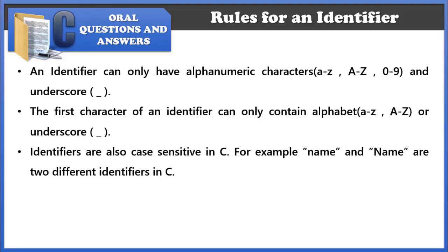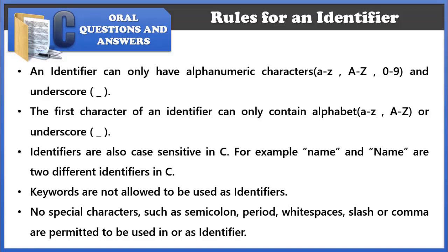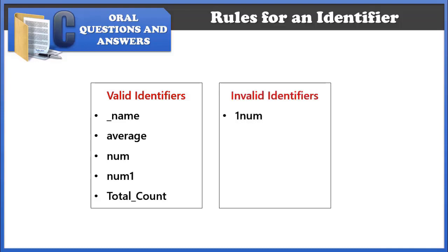For example, if I declare two variables: name with a lowercase n and Name with a capital N, these two identifiers will be treated differently. Fourth, keywords are not allowed to be used as identifiers — there are 32 keywords in C and none can be used as an identifier name. Fifth, no special characters such as semicolons, periods, white spaces, slashes, or commas are permitted in identifiers. Here are examples of valid identifiers (including those starting with underscore) and invalid identifiers — such as those starting with a digit, containing white spaces, or using C keywords.